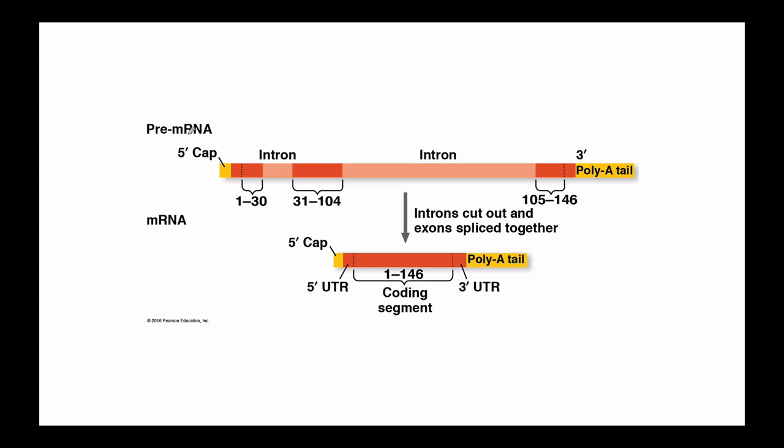Some other things occur. A five prime cap is added. Think of this as like the helmet, a hard hat that protects the message so it doesn't get disturbed and it travels out of the nuclear pore.